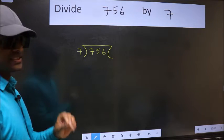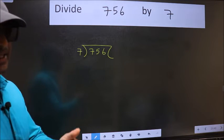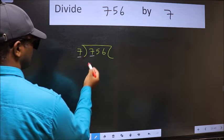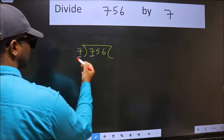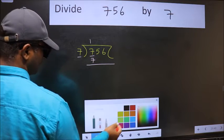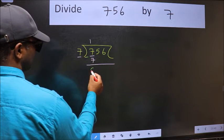This is your step 1. Next, here we have 7 and here 7. When do we get 7 in the 7 table? 7 ones is 7. Now we should subtract. We get 0.